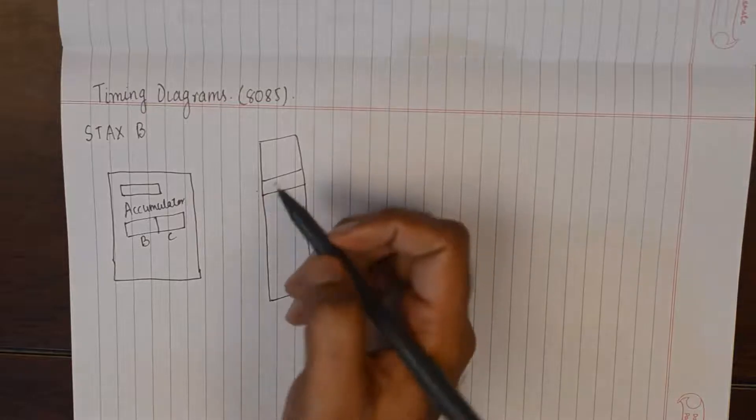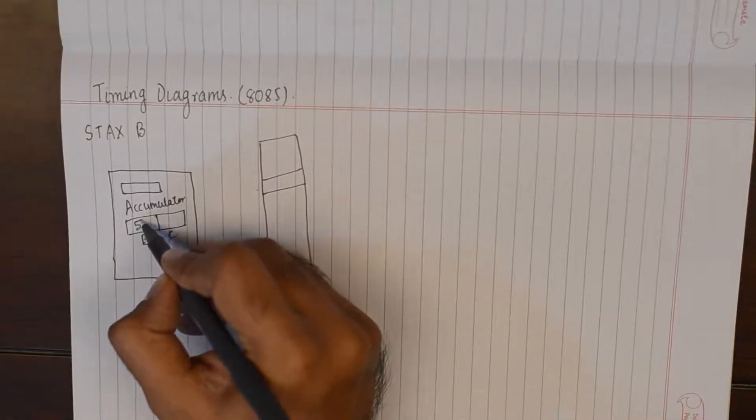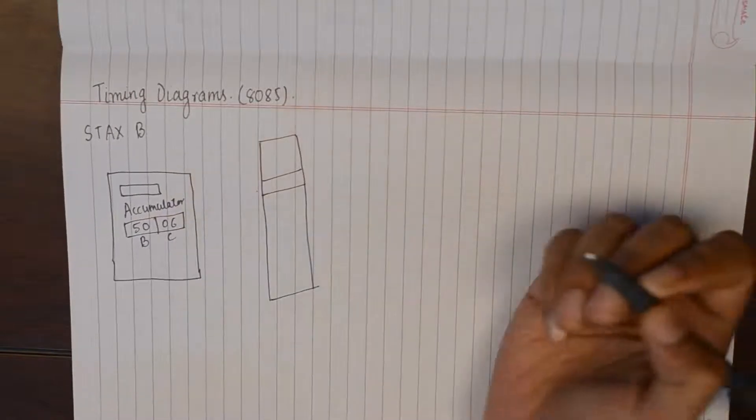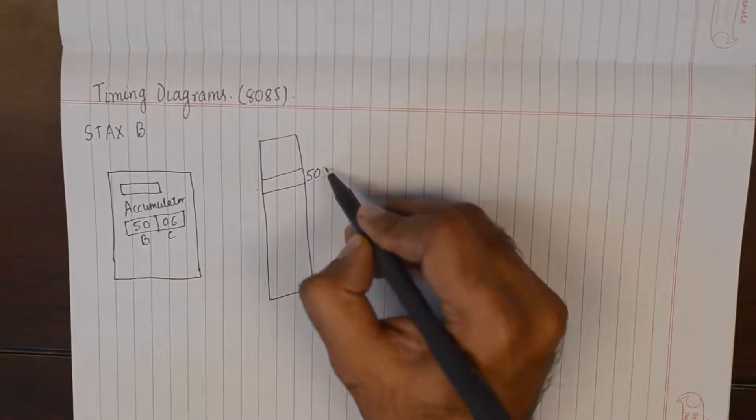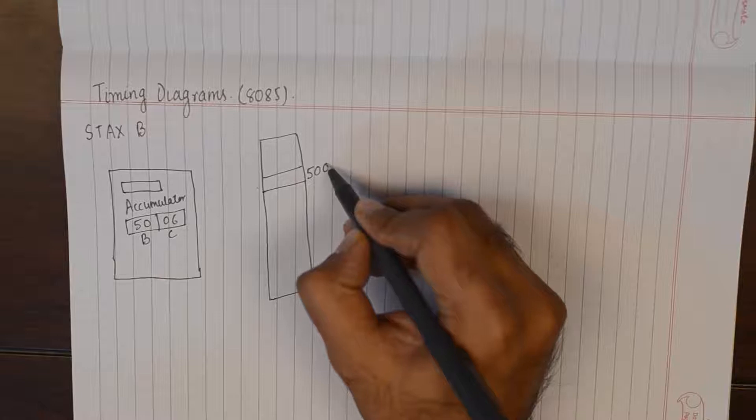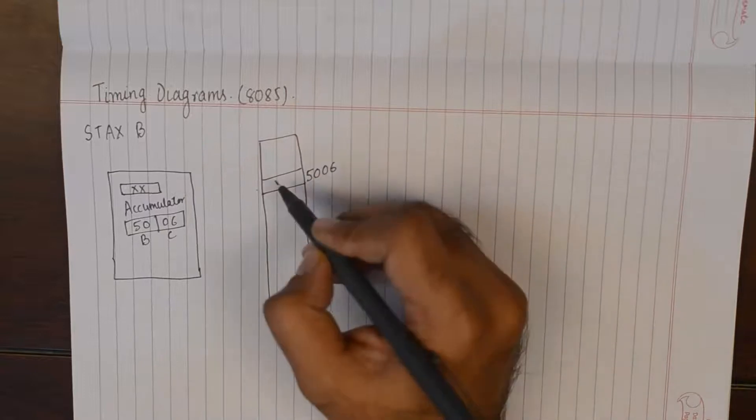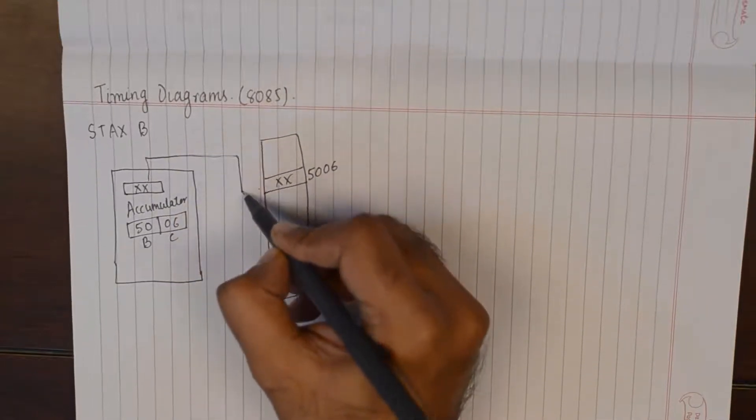Let us suppose that BC is storing 5006. So what will happen at the end of the day is at location 5006 the contents of the accumulator, let us say XX, will be written.